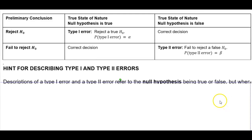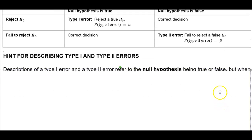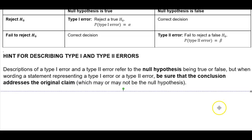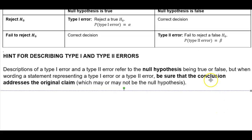A hint for describing type 1 and type 2 errors: descriptions of a type 1 error and a type 2 error refer to the null hypothesis being true or false. But when wording a statement representing a type 1 or type 2 error, be sure that the conclusion addresses the original claim, which may or may not be the null hypothesis.